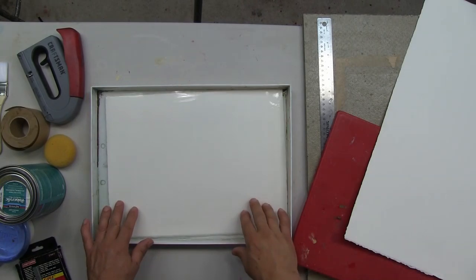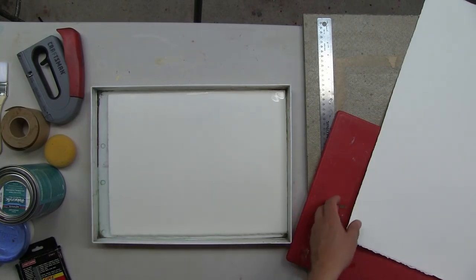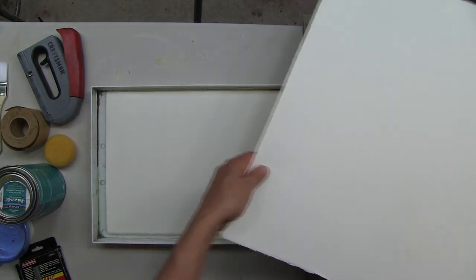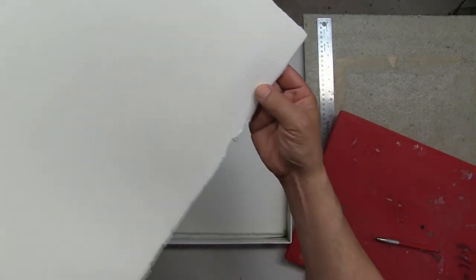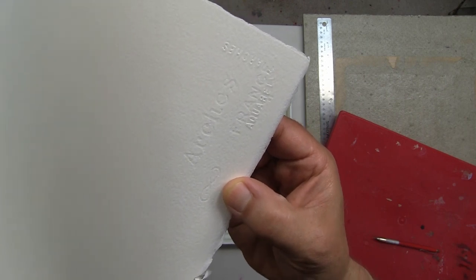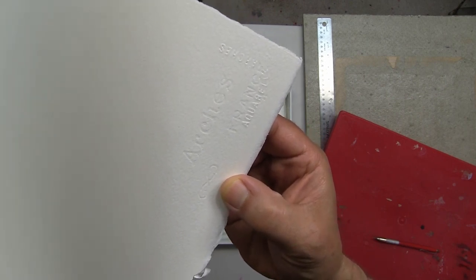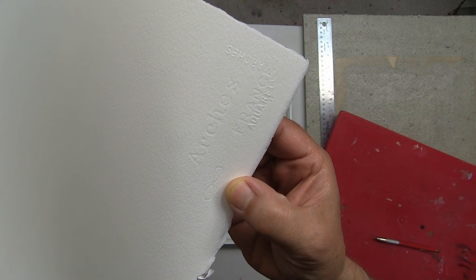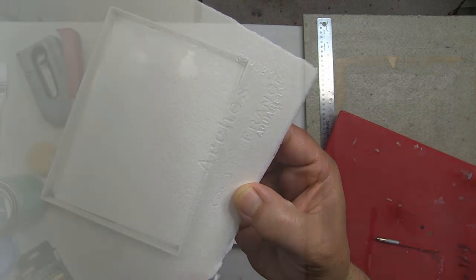The paper has been soaking for about 15 minutes and it's thoroughly saturated. The next step is to mount it to the homosote board. The arches watermark that is imprinted on the paper indicates the side of the paper that should face up. This is the side that you will paint on and it is slightly more textured than the back side of the sheet.